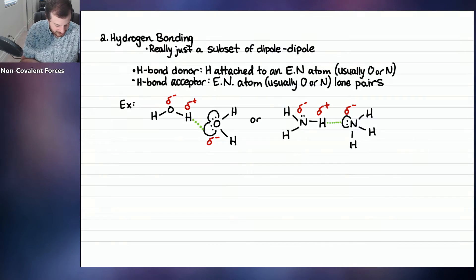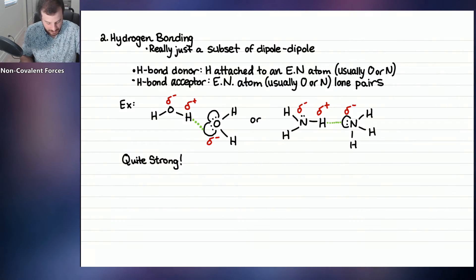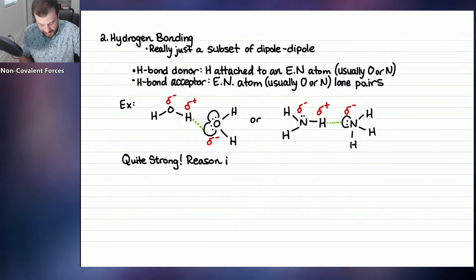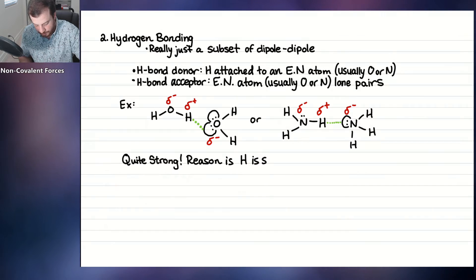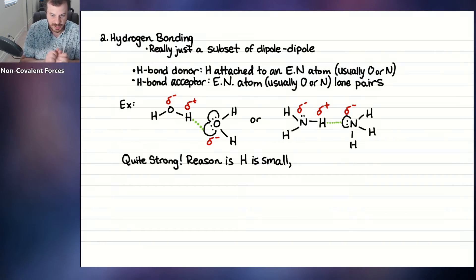Why distinguish hydrogen bonding from regular dipole-dipole interactions if it's just a subset? Because these interactions are quite strong. The reason is that the hydrogen atom itself is small, so the partial charges can get very close to each other, making the interaction considerably stronger.